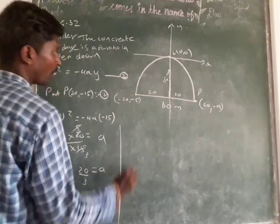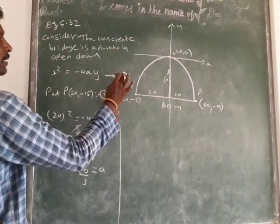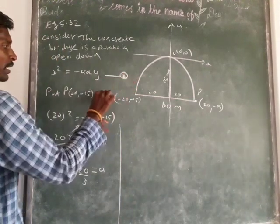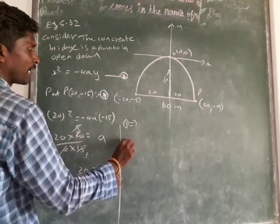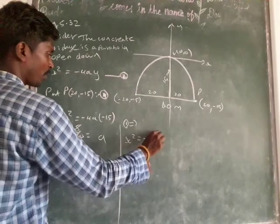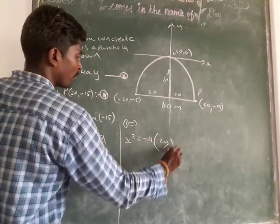So from equation 1, take equation 1. I substitute, take equation 1. So from equation 1, x² = -4a into 20/3 y.